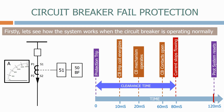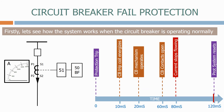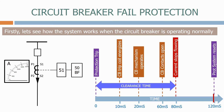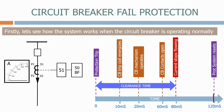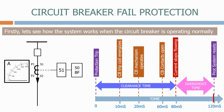The amount of time from the moment of the protection trip to when the current stops flowing is classed as the clearance time. This is fairly constant and depends on the operation of the circuit breaker mechanism. The time from when the current stops flowing to when the protection system resets is called the overshoot time.